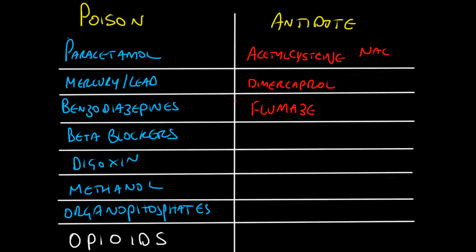For benzodiazepines, you would use flumazenil, and you should beware of the seizure potential. In A&E, people will often have taken both benzodiazepines and alcohol, because alcohol works at the same or similar receptor sites as benzodiazepines.